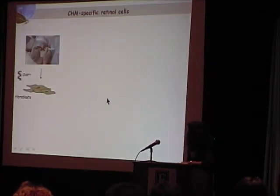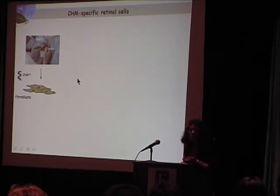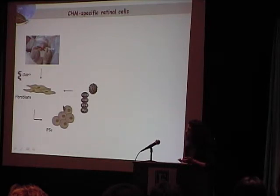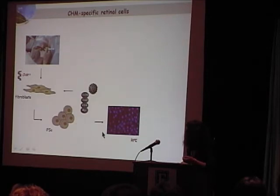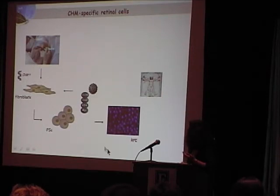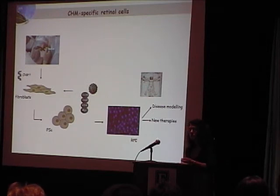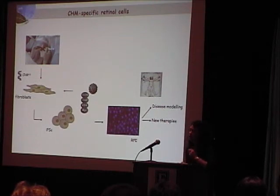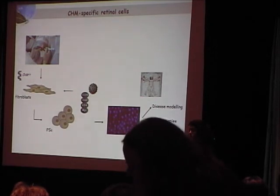Our strategy is to take skin cells from a patient who carries a mutation in the CHM gene, to transform them or reprogram them into stem cells, and then take these stem cells and differentiate them into the RPE. And in this way, we have a human cellular model that can be used for multiple things: first for disease modelling — meaning we can actually study the disease in the actual cell type that is affected — or we can use it to test new therapies.